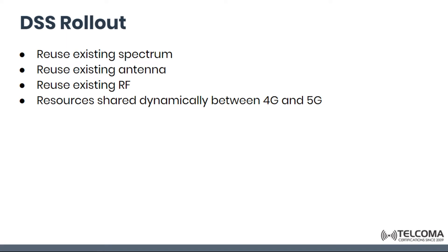For traditional radio network rollout, we need new spectrum, new antenna and new RF units. But for dynamic spectrum sharing rollout, we can reuse existing spectrum, reuse existing antenna, reuse existing RF, and resources can be shared dynamically between the 4G and 5G system.